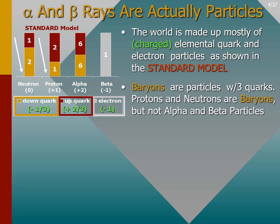However, the alpha particle consists of six up and six down quarks, so the alpha particle and beta particles are not baryons.